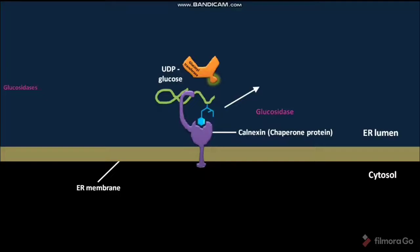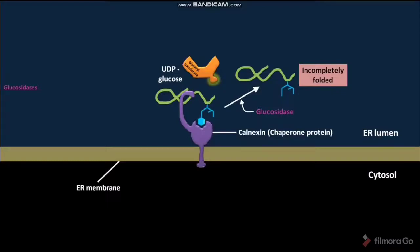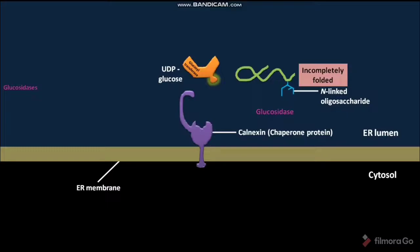In the next step, a glucosidase removes the terminal glucose molecule in the N-linked oligosaccharide of the incompletely folded protein. Due to this glucose removal, the incompletely folded protein is released from the calnexin. This released protein has an N-linked oligosaccharide with no glucose molecule.